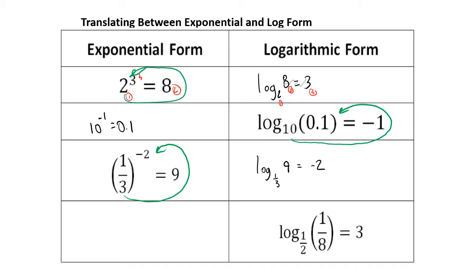And the last one: using the loop trick, we get 1/2 to the 3rd power equals 1/8. Of course it does — that's 1 cubed over 2 cubed, which is 1 over 8.